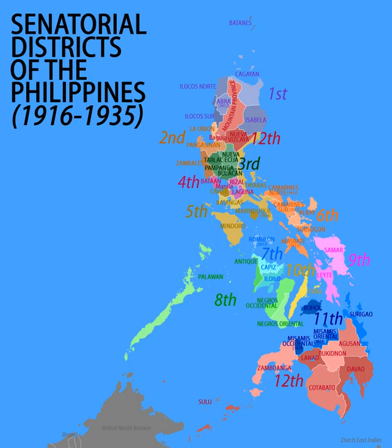The enactment of the Philippine Autonomy Act, popularly known as the Jones Law, in August 1916 by the United States Congress provided for the creation of a bicameral legislature consisting of a lower chamber and an upper chamber. Until then, the Philippine Commission held the executive power and some legislative powers over the American colony.